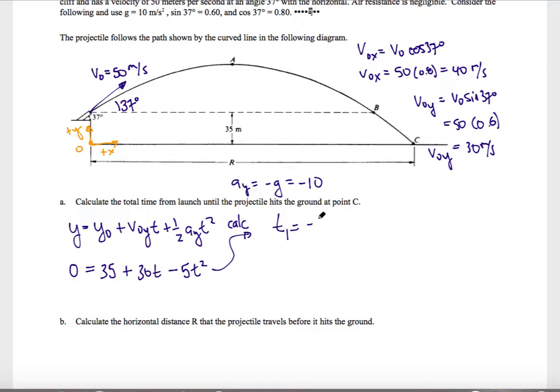I get t1 is negative 1, and t2 is positive 7. I do not want this negative value because that occurred before this problem started. So I'm going to use this positive value of 7 seconds, and that tells me that when my projectile gets to an altitude of 0, 7 seconds has elapsed. So this right here is my answer.